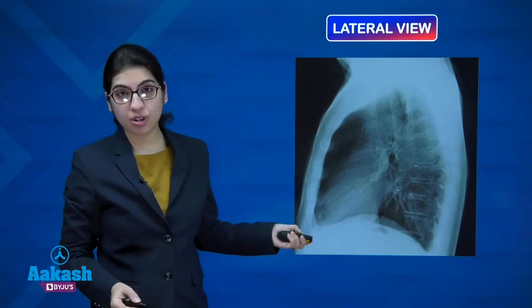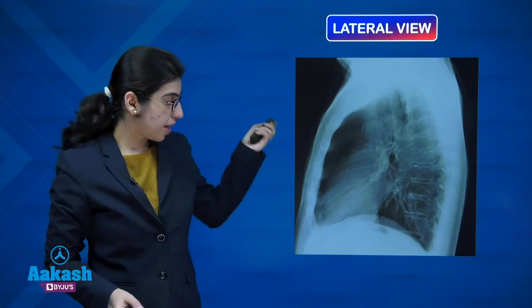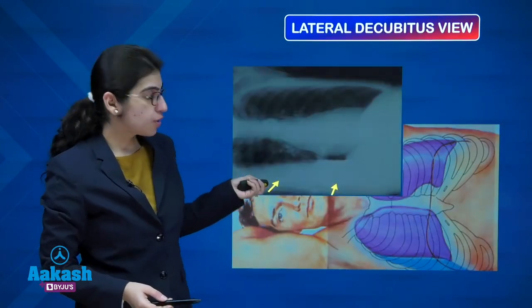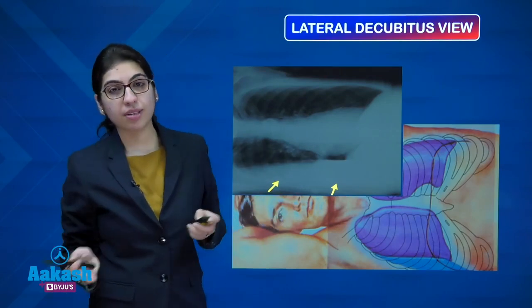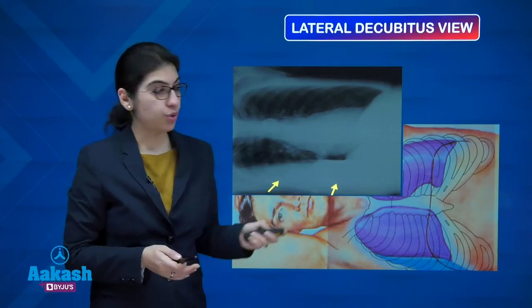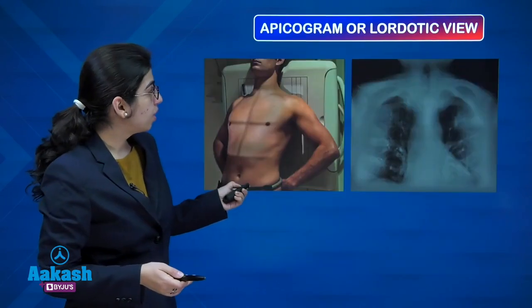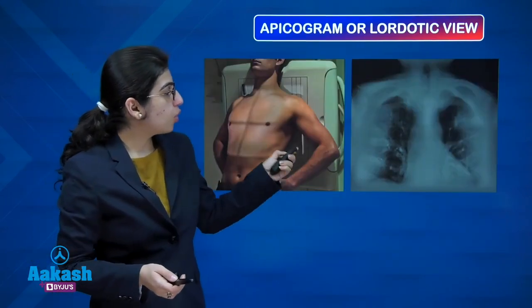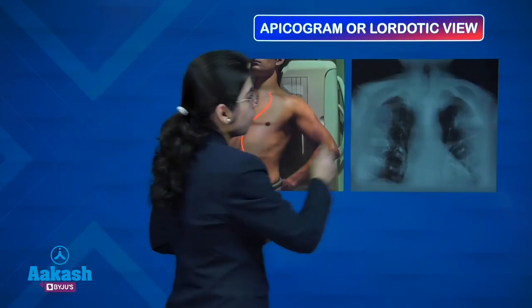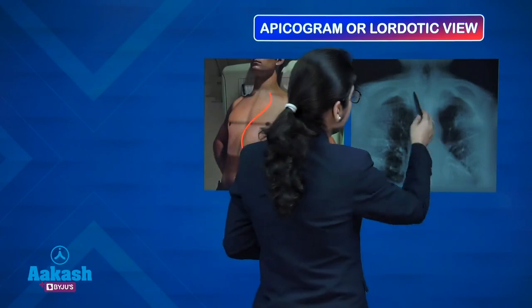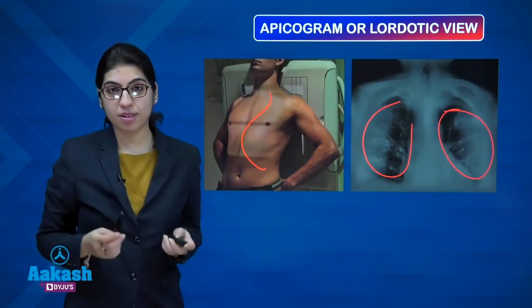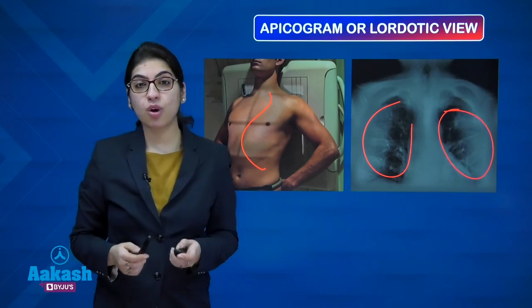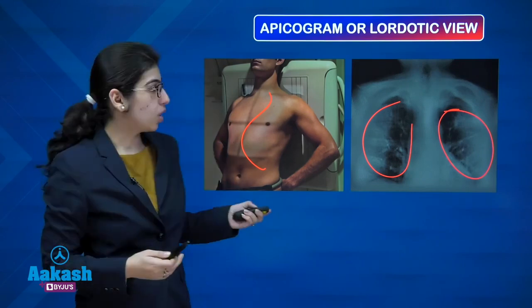This is a normal chest X-ray lateral view — the erect lateral view. The lateral decubitus view has one side of the patient down and is typically very important for pleural effusions. The apiogram or lordotic view is typically useful for bilateral middle lobes or apices — it is used for middle lobe pathologies.